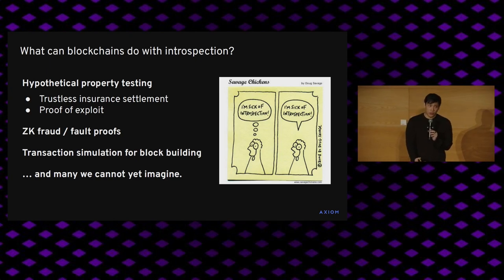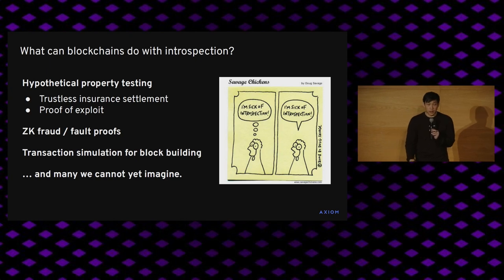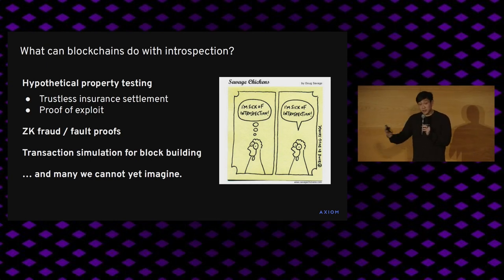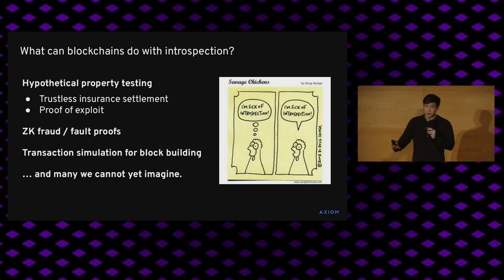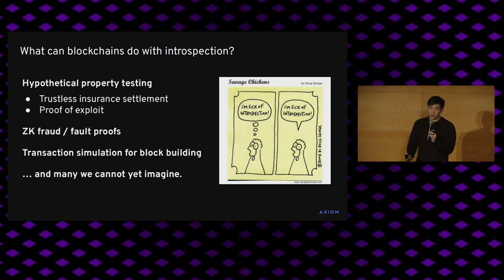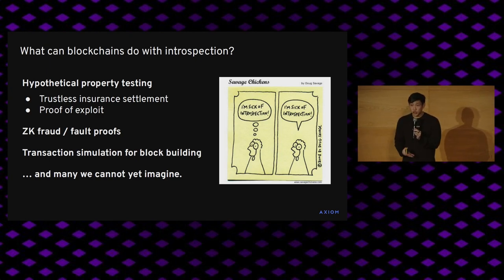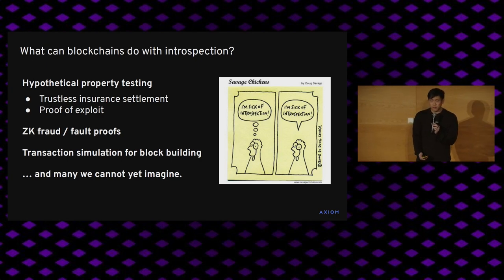At the infrastructure level, proof of exploit is actually quite similar to the notion of a ZK-based fraud or fault proof. In an optimistic rollup, a fraud proof is nothing more than a demonstration that the state claimed on-chain by a sequencer is not the correct application of a sequence of transactions. In the domain of MEV and block building, doing hypothetical execution of transactions being submitted in a mempool could provide accountability or performance evaluation for block builders — for example, proving that of all transactions in some set, you built a block which is good by some arbitrary performance metric. We're very early in thinking about the implications of introspection for applications in the space.